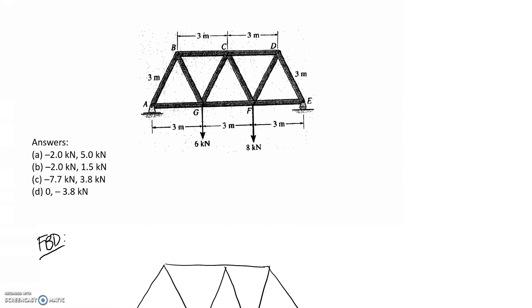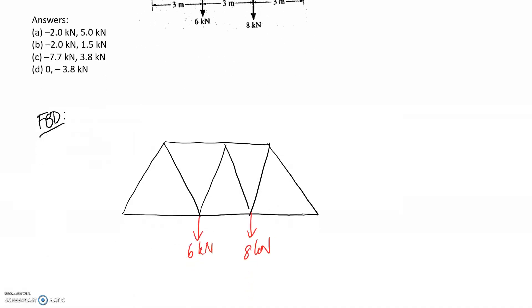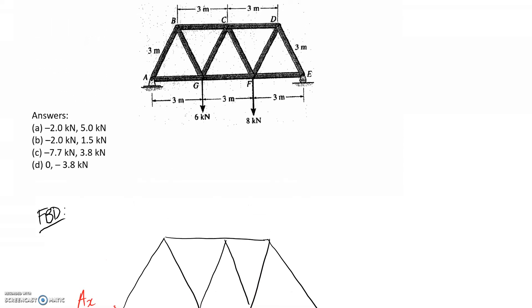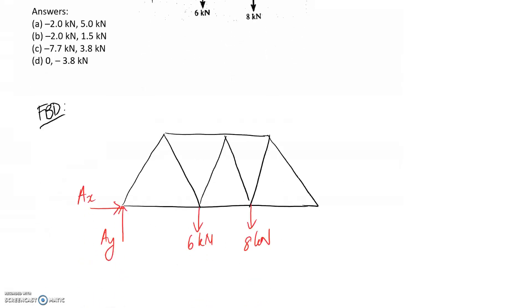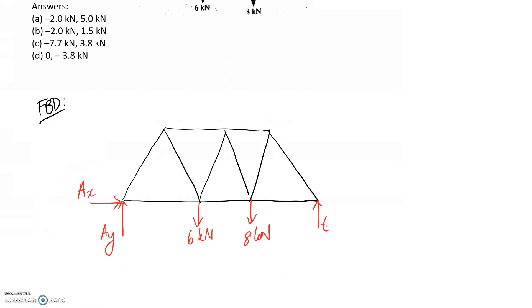In terms of the supports, A here is drawn as a pin. So we know a pin has both a horizontal and a vertical reaction force. We'll call it Ax and Ay. And then at E here, we can see that it's a roller or a rocker. It's able to move horizontally. So that means it's only got the one reaction perpendicular to the surface, which we're calling Ey.